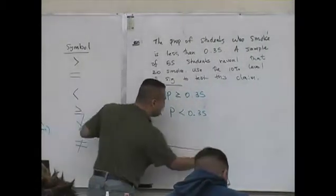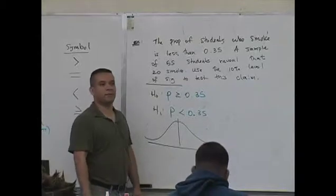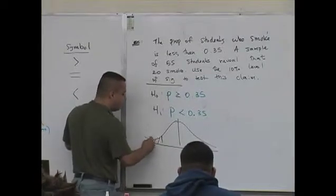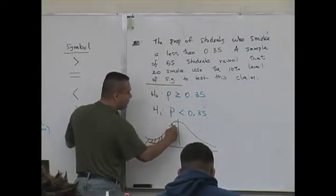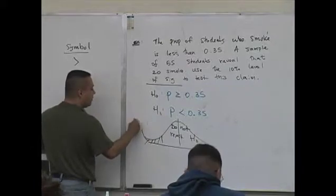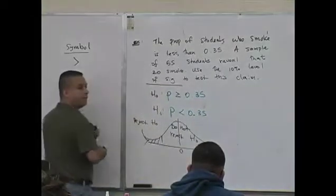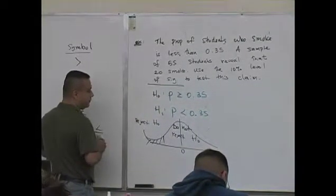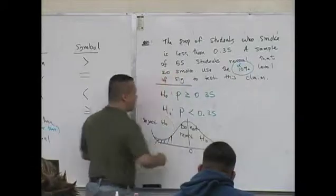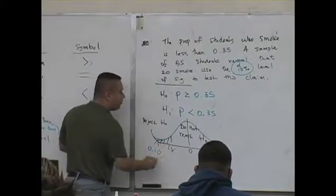Decision rule time. Left tail or right tail? Left tail. Do not reject the null, reject the null. What's your alpha? 10 percent, 0.10. We need a critical value.